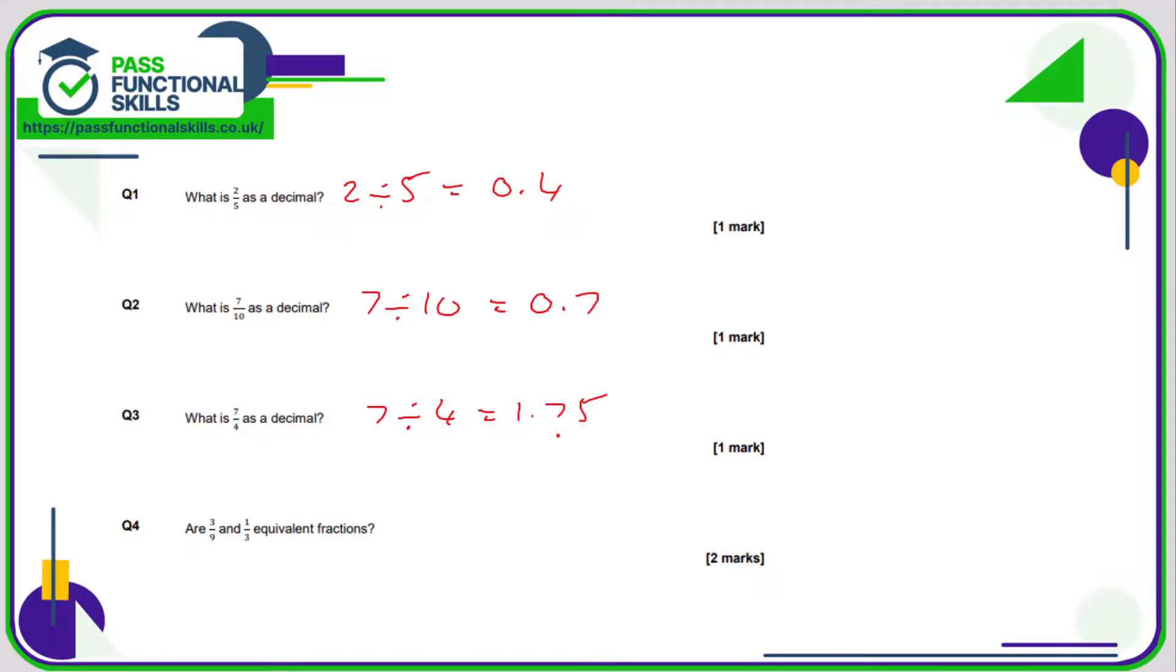Question four: we're not allowed to use a calculator, so can we simplify three ninths? Both three and nine are in the three times table, so if we divide both the top and the bottom by three, three divided by three gives us one and nine divided by three gives us three. So three ninths is the equivalent of one third.